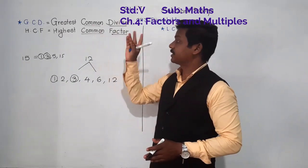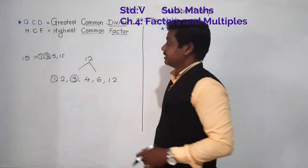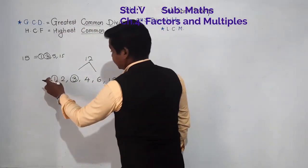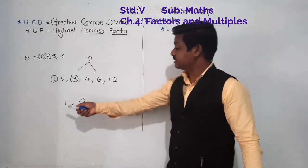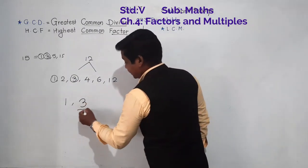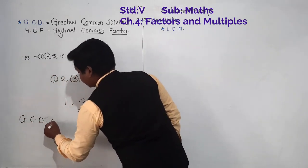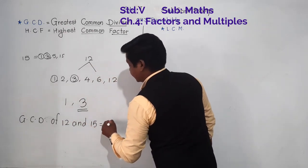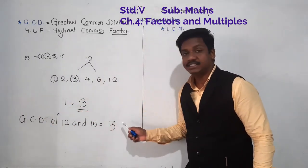So 1 and 3 are the common divisors or common factors of 12 and 15. Now, GCD means Greatest Common Divisors. We have found common divisors 1 and 3. Which one is greater? 3 is greater. So GCD of 12 and 15 is 3 — meaning the greatest common divisor of 12 and 15 is 3.